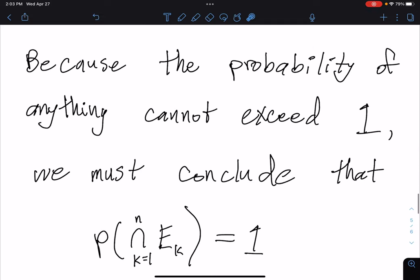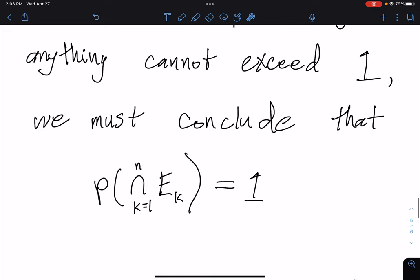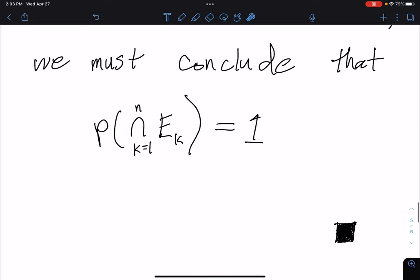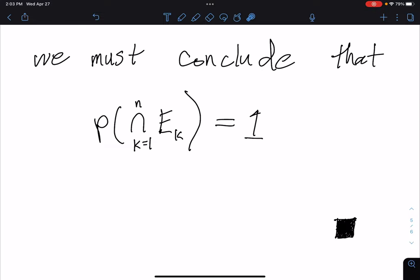Now because probability of anything cannot exceed 1, this just comes from the definition of what probability is, we must conclude that the probability of this intersection has to equal 1. Because as we showed up here, this inequality gives us that it has to be greater than or equal to 1, but we know that it cannot be greater than 1, so it must therefore be equal to 1.